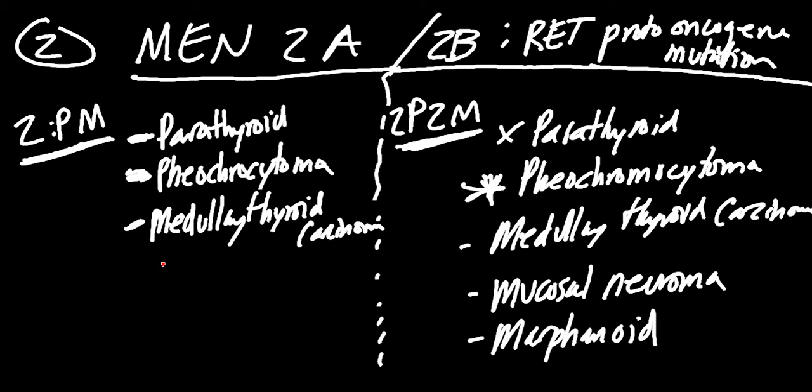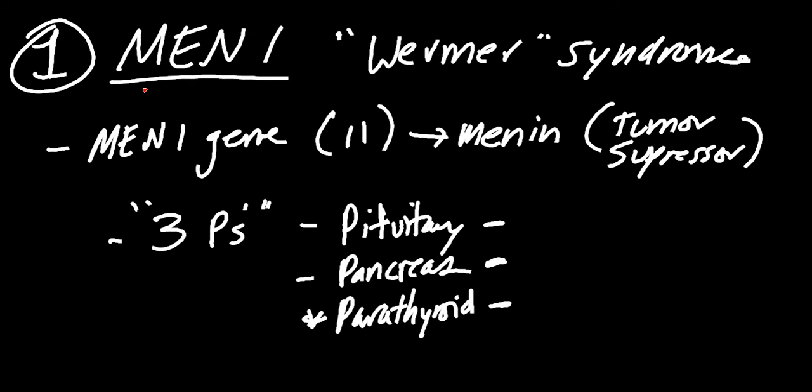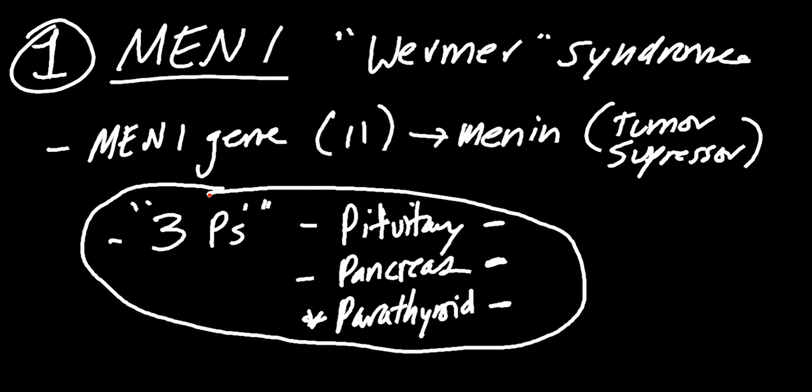I'm going over the very basics. Just realize that for the higher yield stuff, for MEN-1, also known as Wormer syndrome, just remember it's a tumor suppressor that gets messed up. You're not able to suppress that tumor. You're going to have a mutation there, and you're going to be dealing with 3Ps. There will be no M disorders, just the Ps. You've got your pituitary, pancreas, and parathyroid.